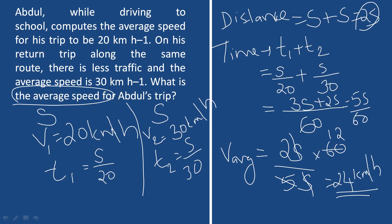So the average speed over the entire trip is 24 km per hour. If you have any questions about this problem, comment below and we will discuss it in the next video. Thank you for watching. Have a wonderful day ahead to all of you.